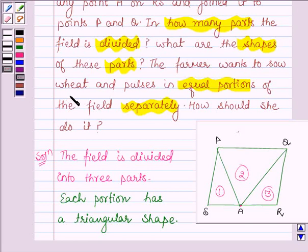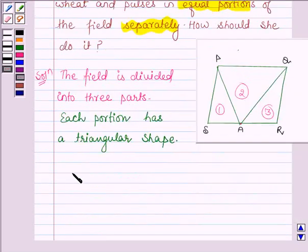Now, the farmer wants to sow wheat and pulses in equal portions of the field separately. How should she do it? As we know,